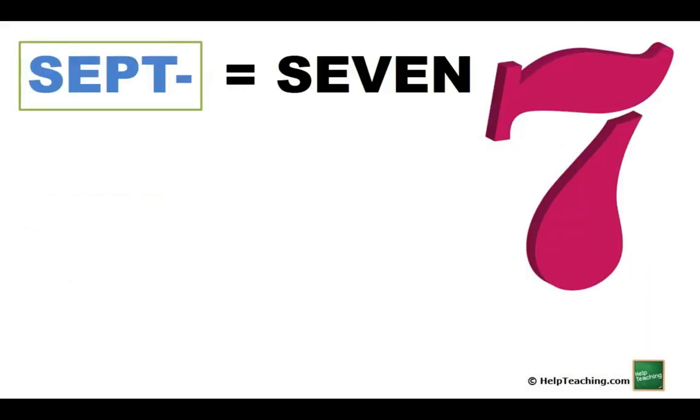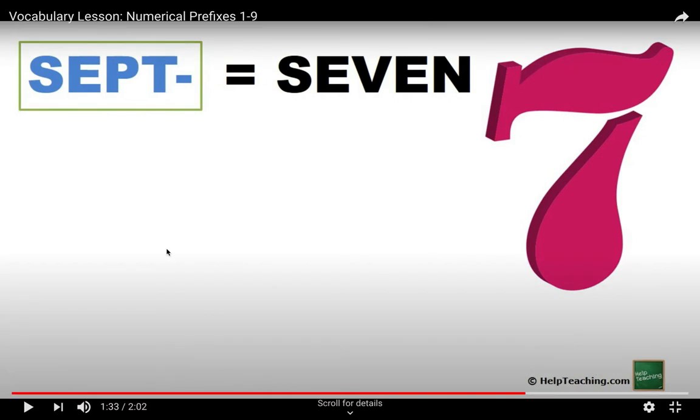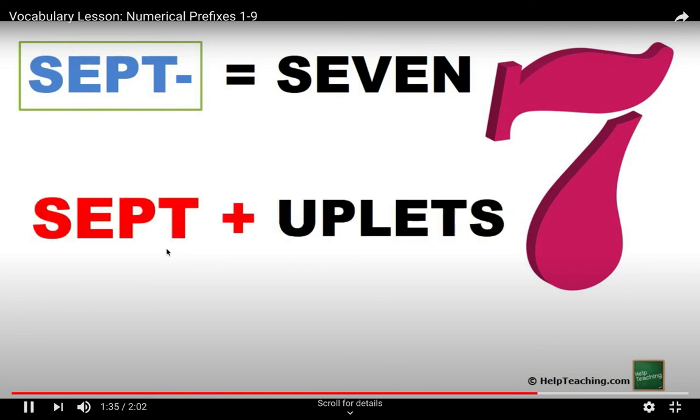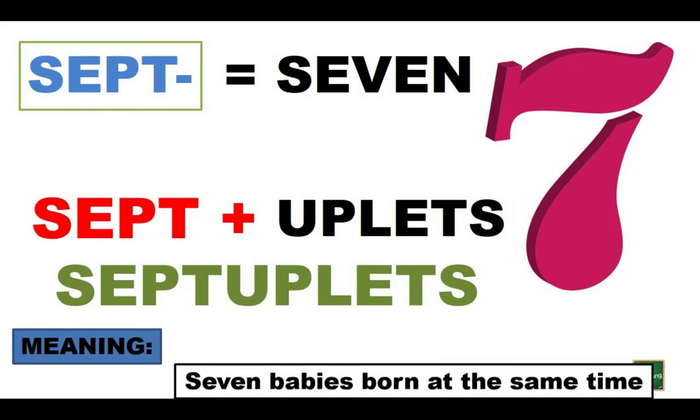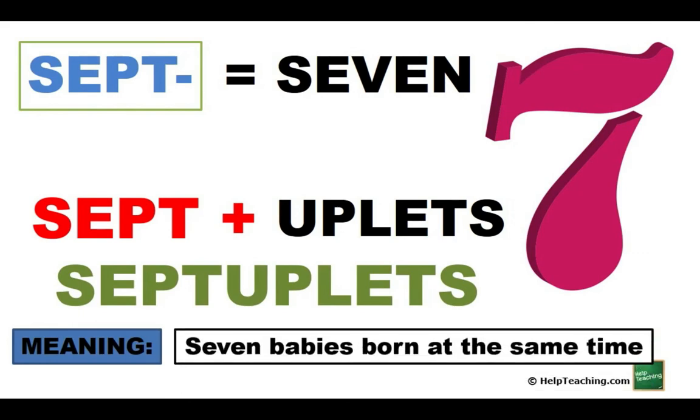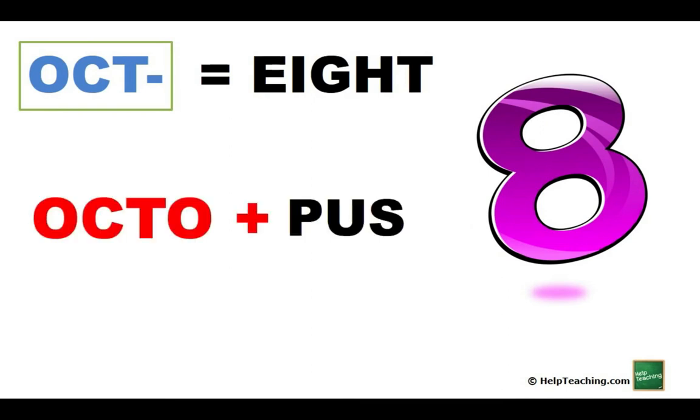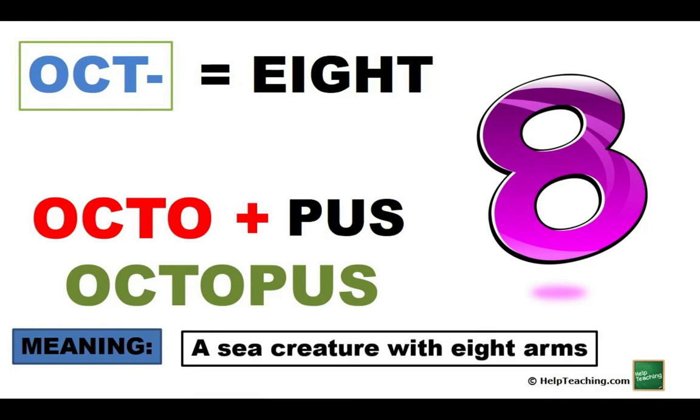Sept equals seven. Now also the word sept is an abbreviation for September, but remember we're learning prefixes for numbers and sept means seven. Septuplets, meaning seven babies born at the same time. Yeah, that's possible too. Eight, octu plus pus means octopus, a sea creature with eight arms.